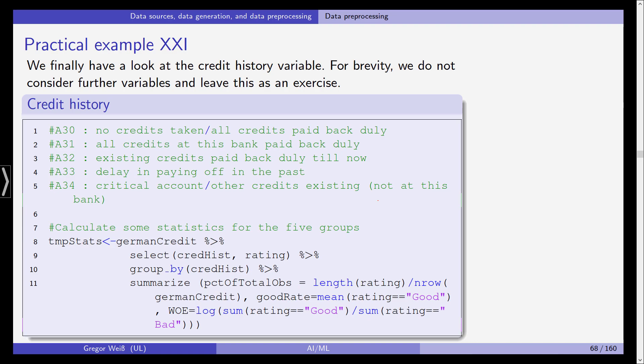So let's use credit history. It has five values: no credits taken, all credits paid back duly, all credits at this bank paid back duly. The second line, A31, will probably be the best predictor and the best level if we are interested in a good rating because it means you've taken up loans and you've paid all those loans back in time. Then existing credits paid back duly till now, delay in paying off, and critical account. So that's the worst state of this variable.